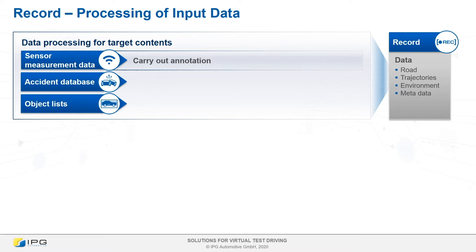A high quality can be achieved by using sensor raw data, for example from 360-degree LIDAR recordings. However, it is necessary to annotate and label this data first to get the information to generate the road, the trajectory of the vehicles or the environment.